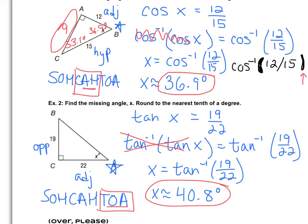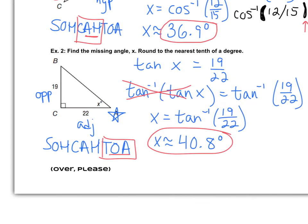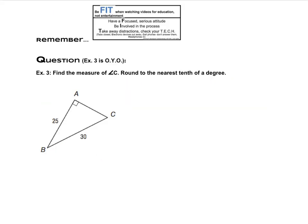As we think about our last example for today, the last example that we need here is going to be a question that you're going to do on your own. So go ahead and make sure that you label those sides like we did. Make sure your calculator is still in degree mode and that you are using whichever part of Sokotoa, the inverse trig function there, that's going to get you your answer.